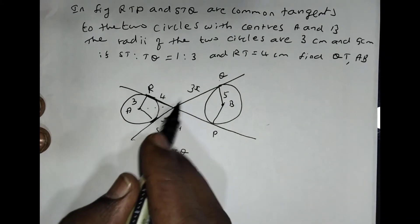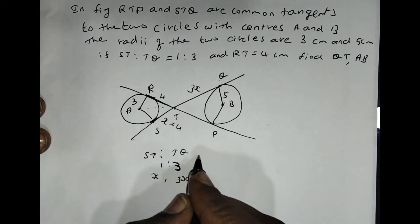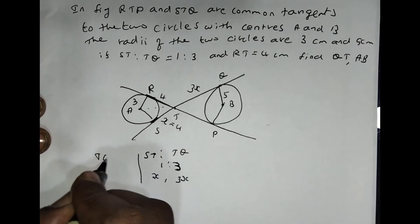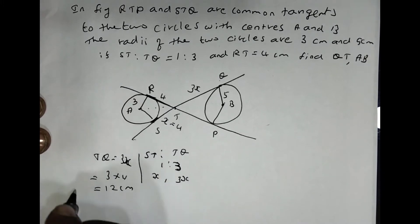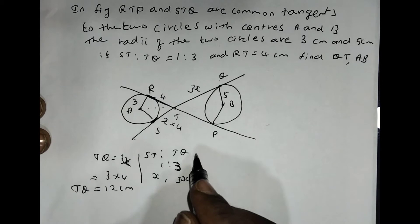Then you want to find the length of TQ. So TQ you take as 3X, then you can multiply 3 into 4. It will become 12cm. The length of DQ equals 12cm.